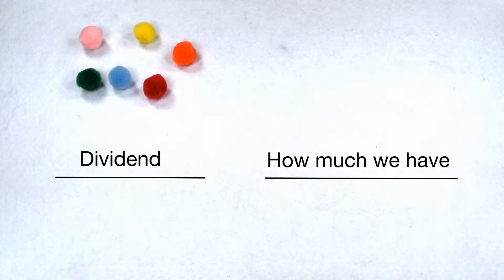In a division problem, the dividend tells us how much we have. The divisor tells us how we want to group or share it.